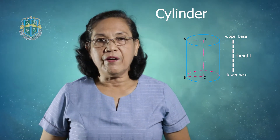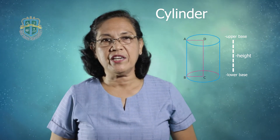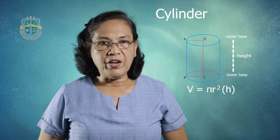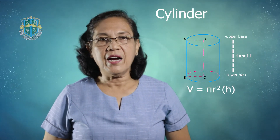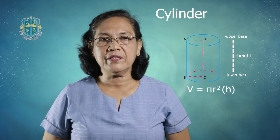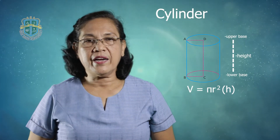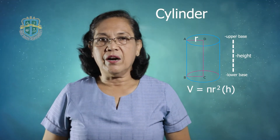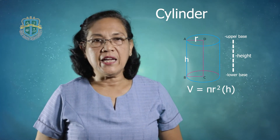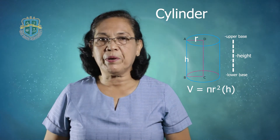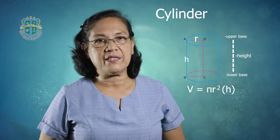The formula for determining the volume of a cylinder is: volume equals pi r squared times h, where r is the radius of the circle and h is the height, or the perpendicular distance between the two bases.